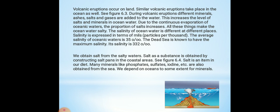We obtain salt from the salty waters. The salty water is collected at salt pans, and they make the water evaporate, leaving salt behind. Salt as a substance is obtained by constructing salt pans in the coastal area near the oceans, so that salt water can get collected in the salt pan. Once it evaporates, salt is left behind and that salt is taken to a factory for processing, and then we get the packed salt.